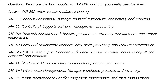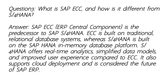SAP HCM (Human Capital Management) deals with HR processes, including payroll and personnel administration. SAP PP (Production Planning) helps in production planning and control. SAP WM (Warehouse Management) manages warehouse processes and inventory. SAP PM (Plant Maintenance) handles equipment maintenance and asset management.